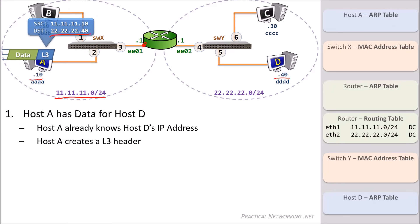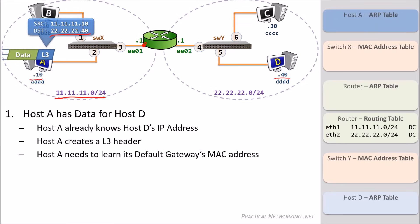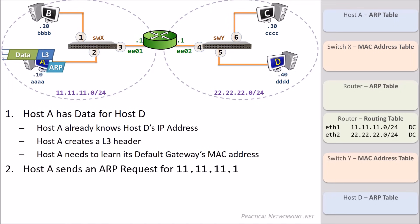Host A will need to create a Layer 2 header to get the packet to the router. But at this point, Host A does not have an entry for the router's MAC address. Host A will have to use the Address Resolution Protocol, or ARP, to discover its default gateway's MAC address. Host A is going to send an ARP request to discover the MAC address that correlates to the IP address 11.11.11.1. The ARP request essentially asks: if the IP 11.11.11.1 is out there, send me your MAC address.